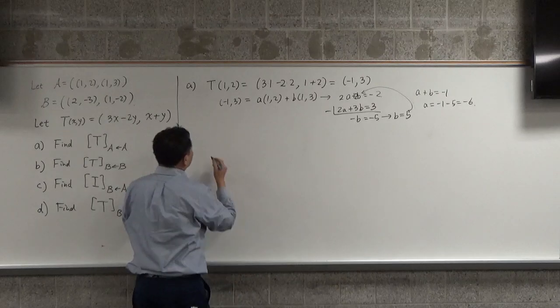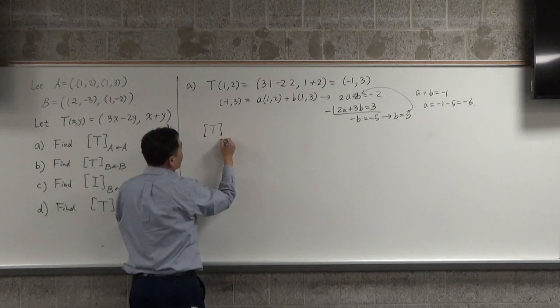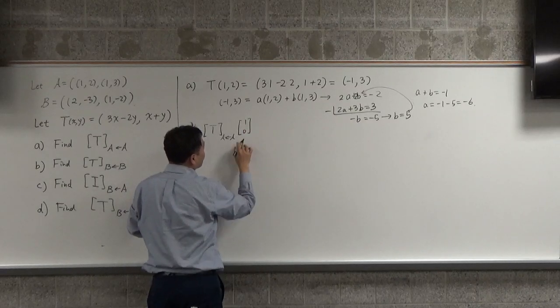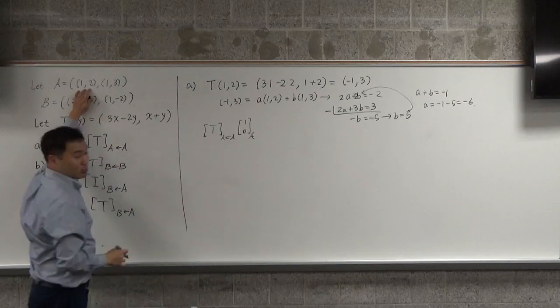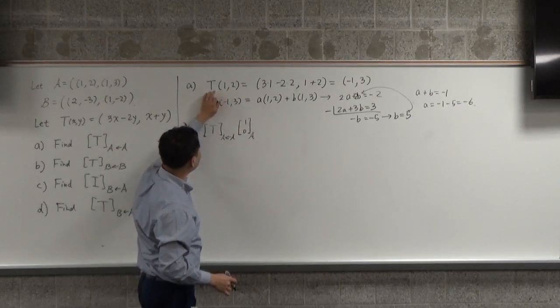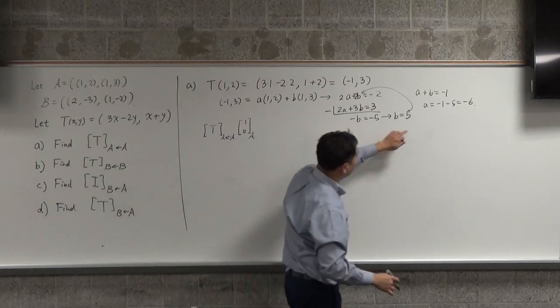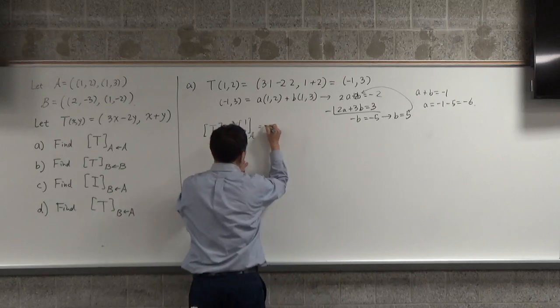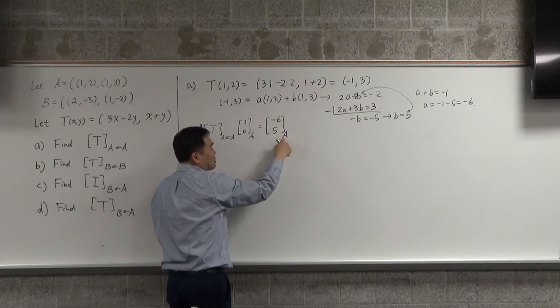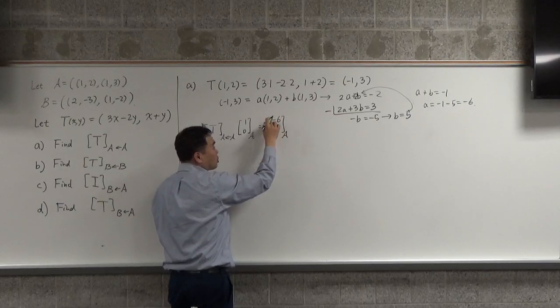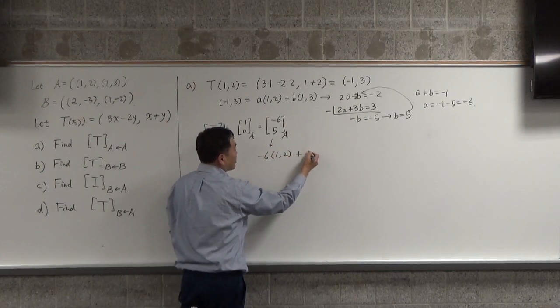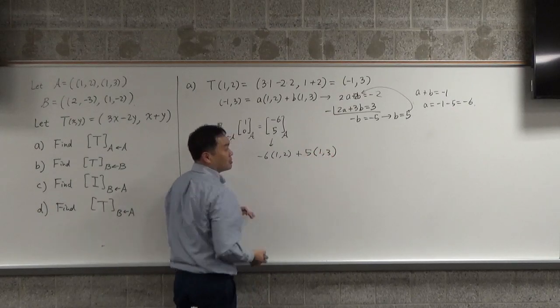Let's multiply by 2 here and subtract so that negative B is equal to negative 5, giving you B as 5. Plug that back in here and see that A plus B equals negative 1 means A is negative 1 minus 5, which is negative 6.